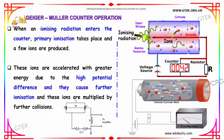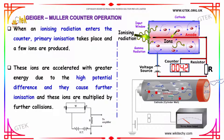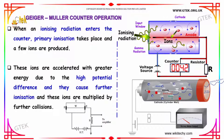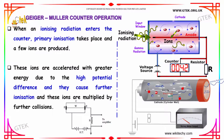When an ionizing radiation enters the counter, primary ionization takes place and a few ions are produced. These ions are accelerated with very high energy due to the high potential difference and they cause further ionization, and these ions are multiplied by further collision.